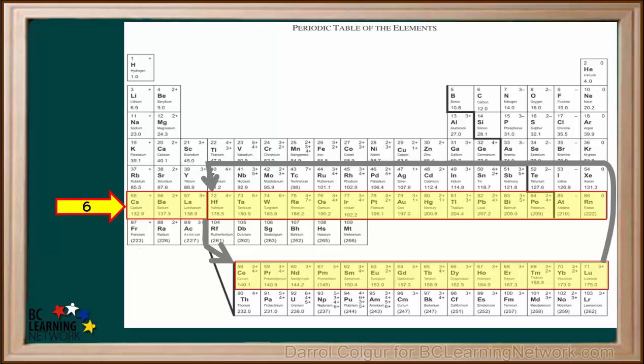So all the elements shaded in yellow here belong to Period 6. Now count all the elements in Period 6. You can see there are 32 elements all together in Period 6.